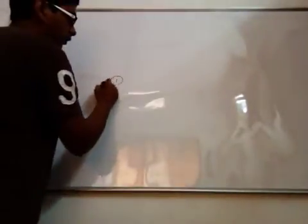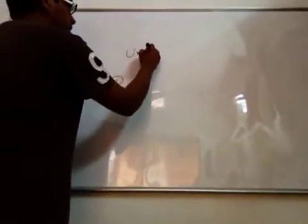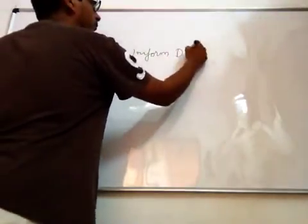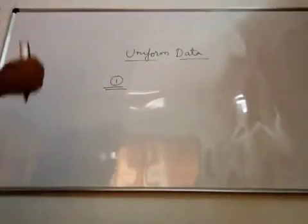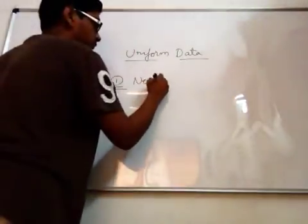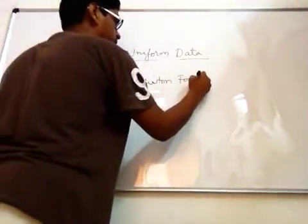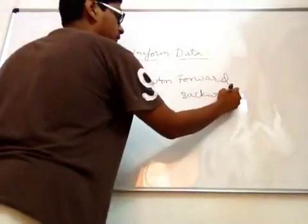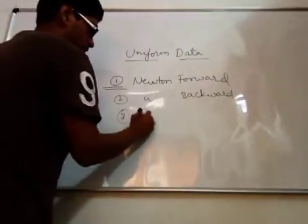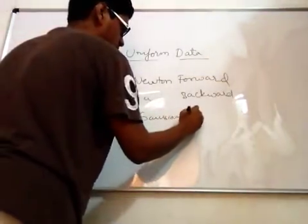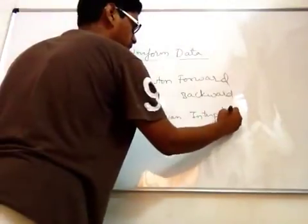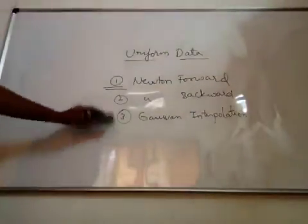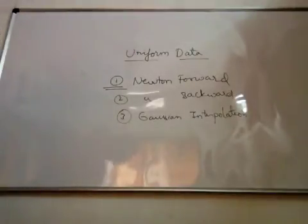So, to carry out interpolation for uniform data, Newton forward interpolation, Newton backward interpolation, and Gaussian interpolation. This Newton forward interpolation can also be called as Newton-Gregory forward interpolation.